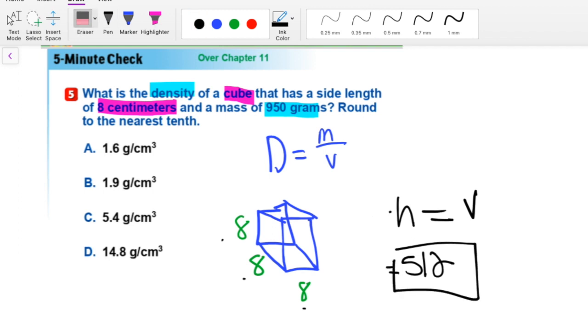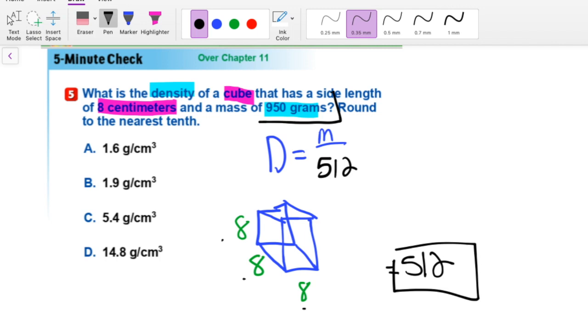So what do we do with that information? All we have to do is put that 512 into a little fraction. So I'm going to delete the little V that we have right here and I'm going to put 512 there. And now we just need to put the mass there. And it says that the mass is 950 grams. So I'm going to delete the M and replace it with 950.